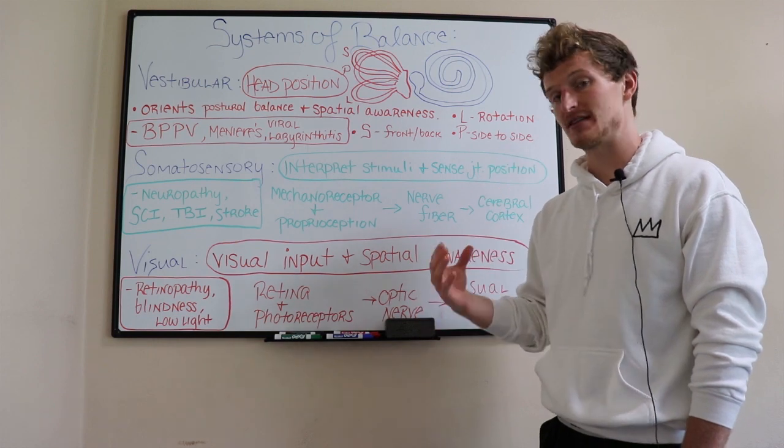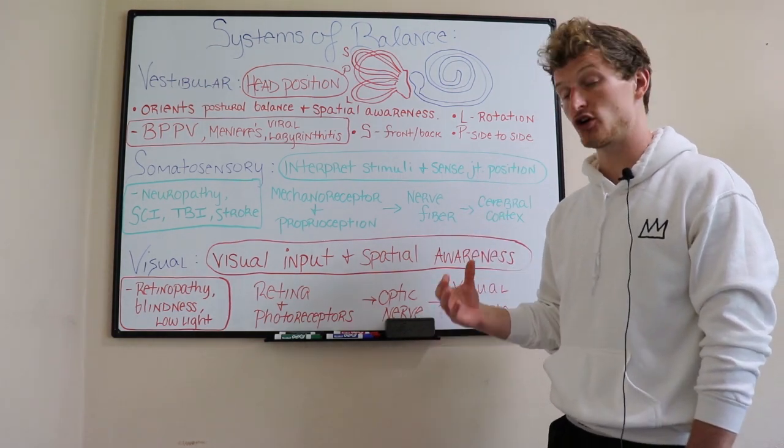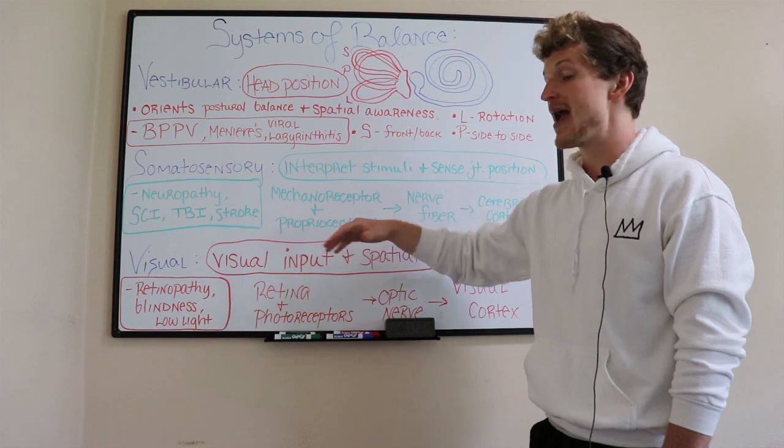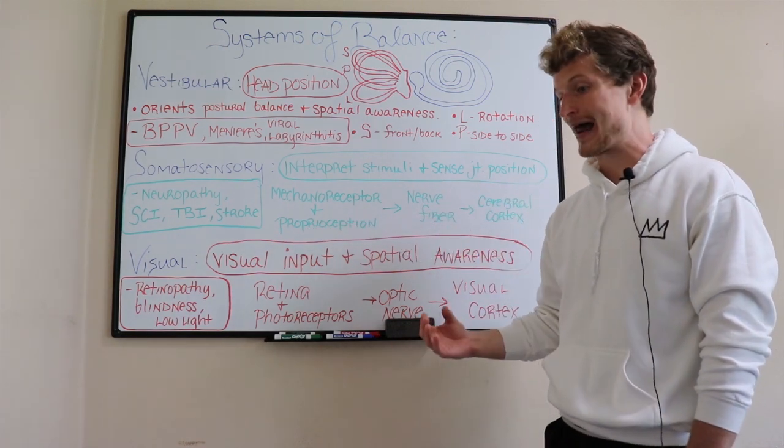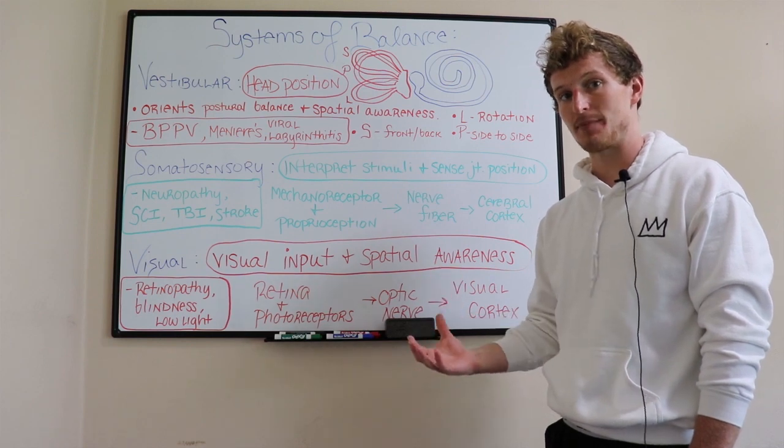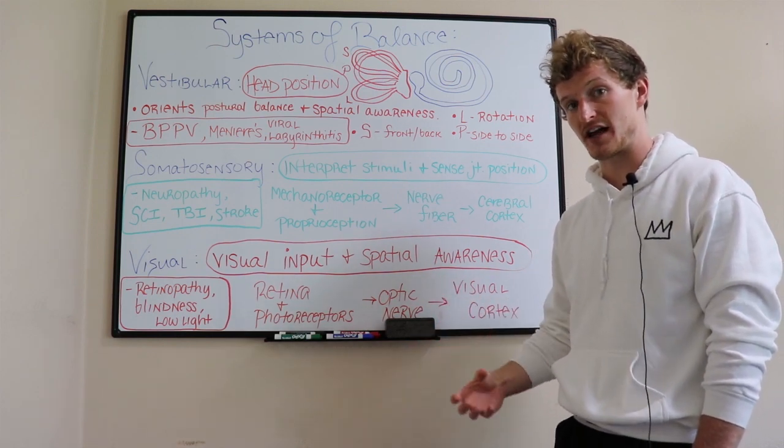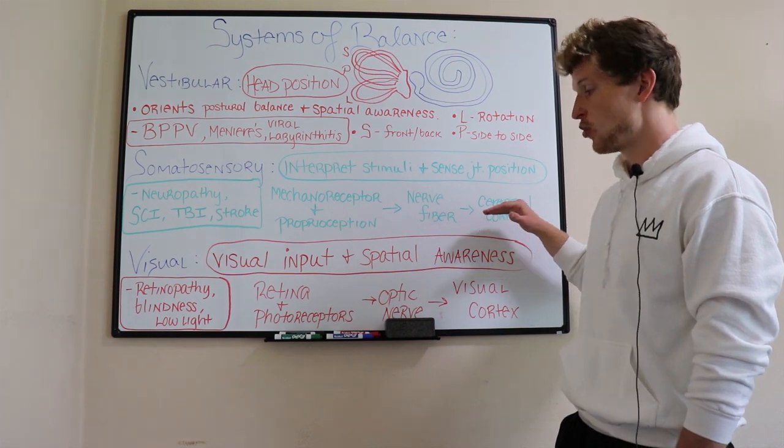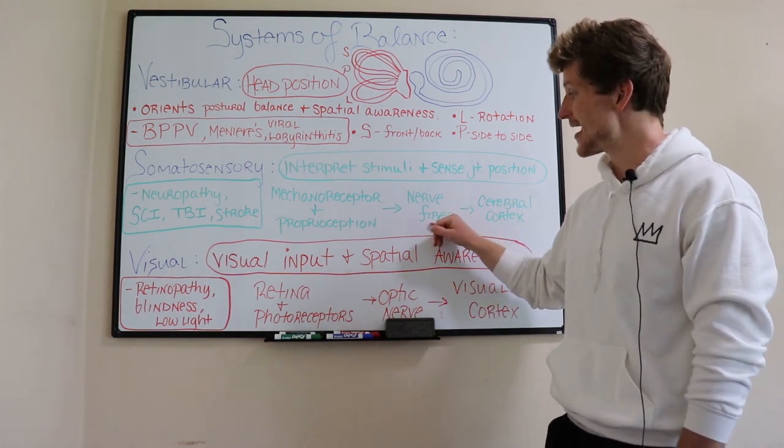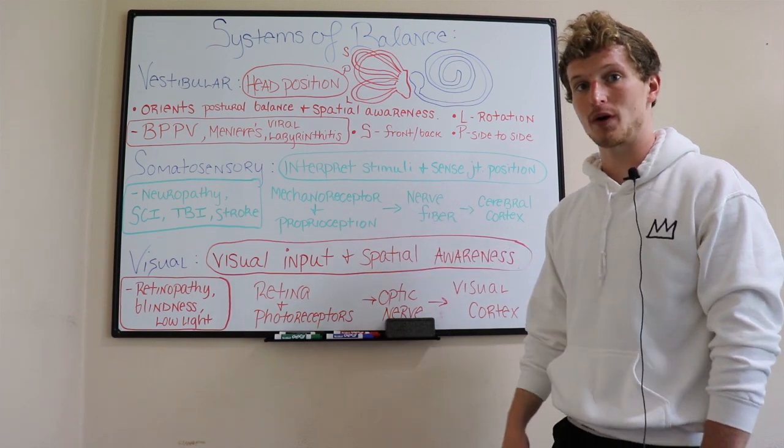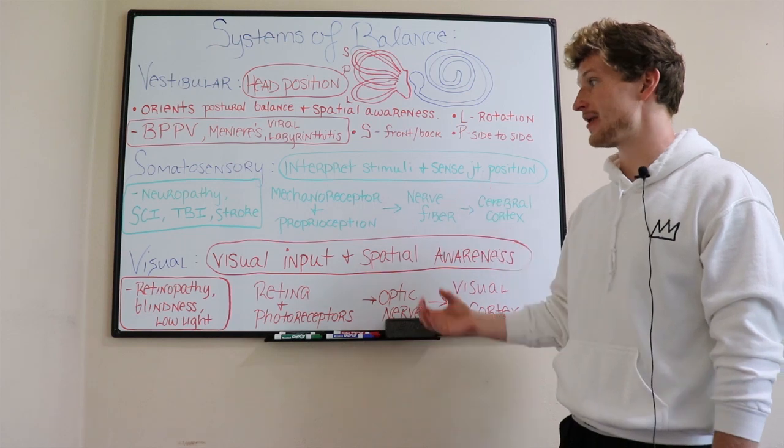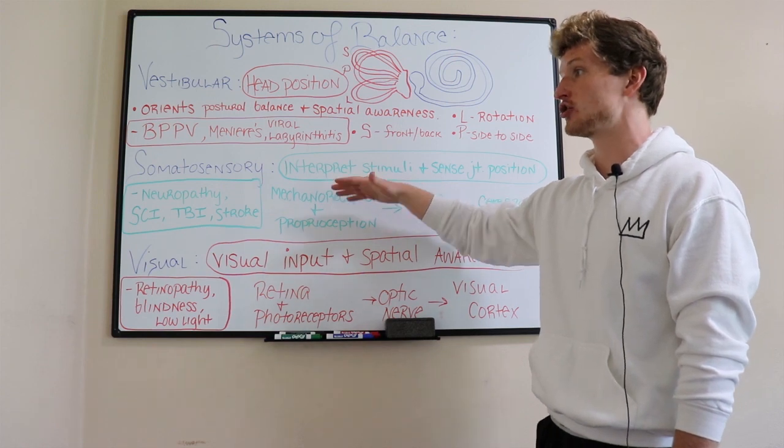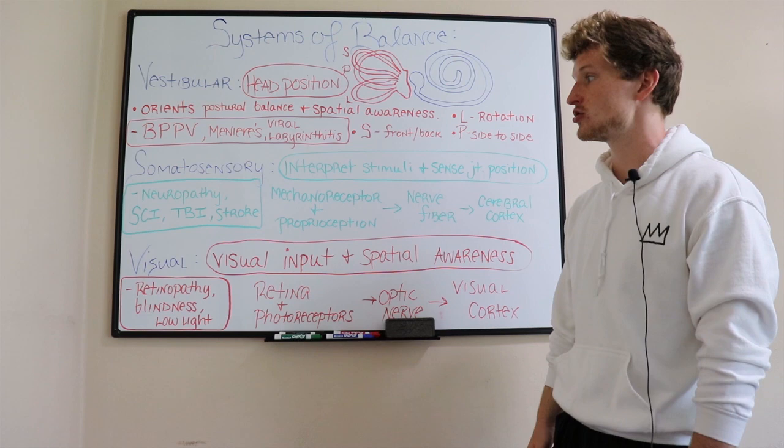Proprioception is sensing your joint in space. So if you're over a bent knee in a deep squat, your proprioceptive feedback would be your joints and cells telling you you're in a bent knee in a deep squat, and how you need to adjust your stability in your foot and ankle to maintain balance. Both of these send input up a nerve fiber to your cerebral cortex, which interprets that input and sends signals back down to tell your body and joints how to find stability and maintain balance as we go through changes in joint position or alternate terrain like compliant surfaces.